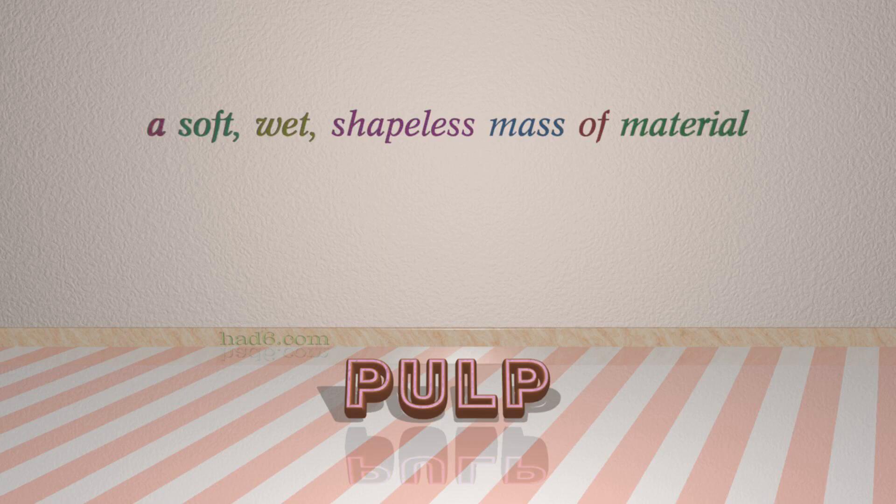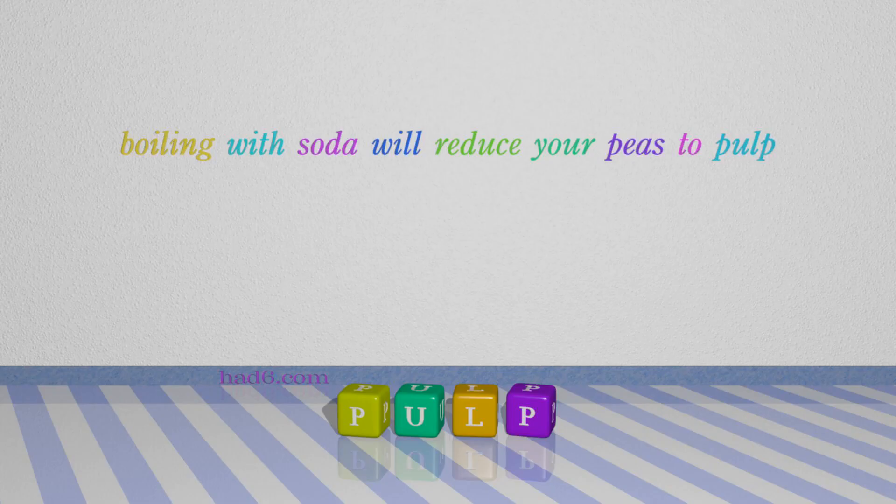Number 4: PULP. Which means a soft, wet, shapeless mass of material. For example: boiling with soda will reduce your peas to pulp.